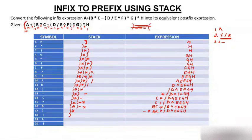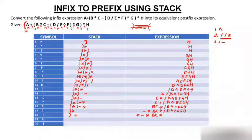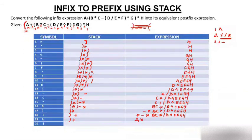Then plus comes. Plus has lower priority than multiply, so multiply jumps to the expression. Multiply comes out, and we now have minus, multiply, b, c, multiply, divide, d, power, e, f, g, h. Then operand a comes and goes to the expression, giving a, multiply, minus, multiply, b, c, multiply, divide, d, power, e, f, g, h.